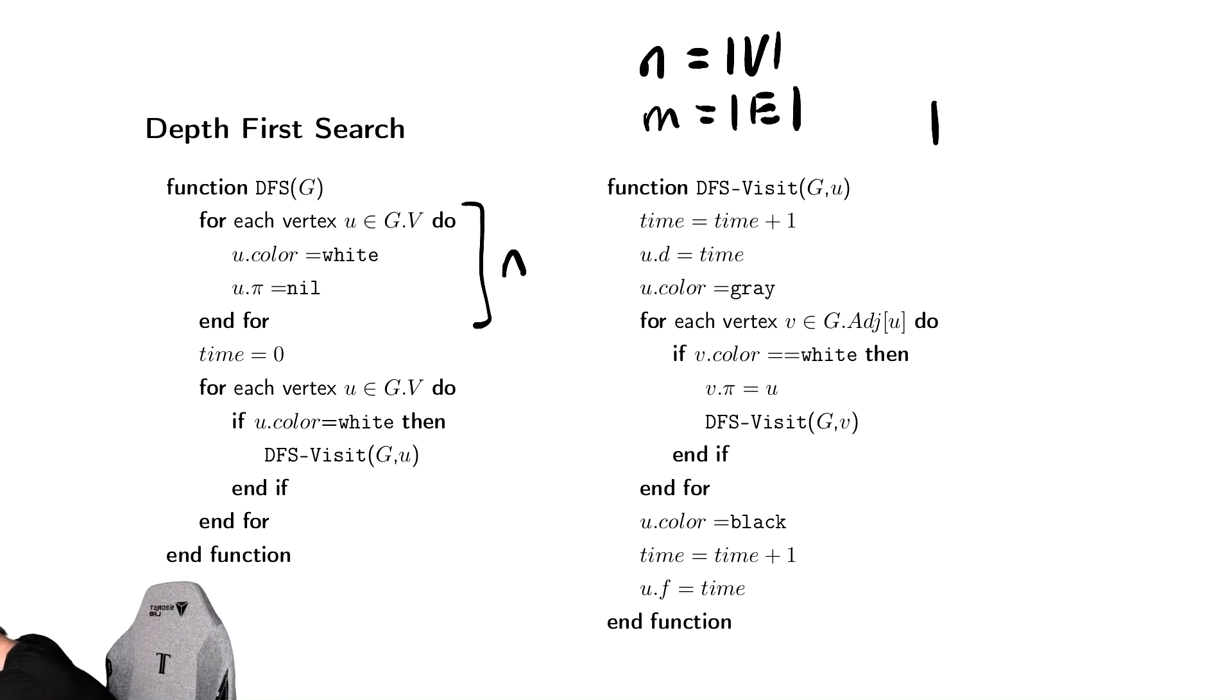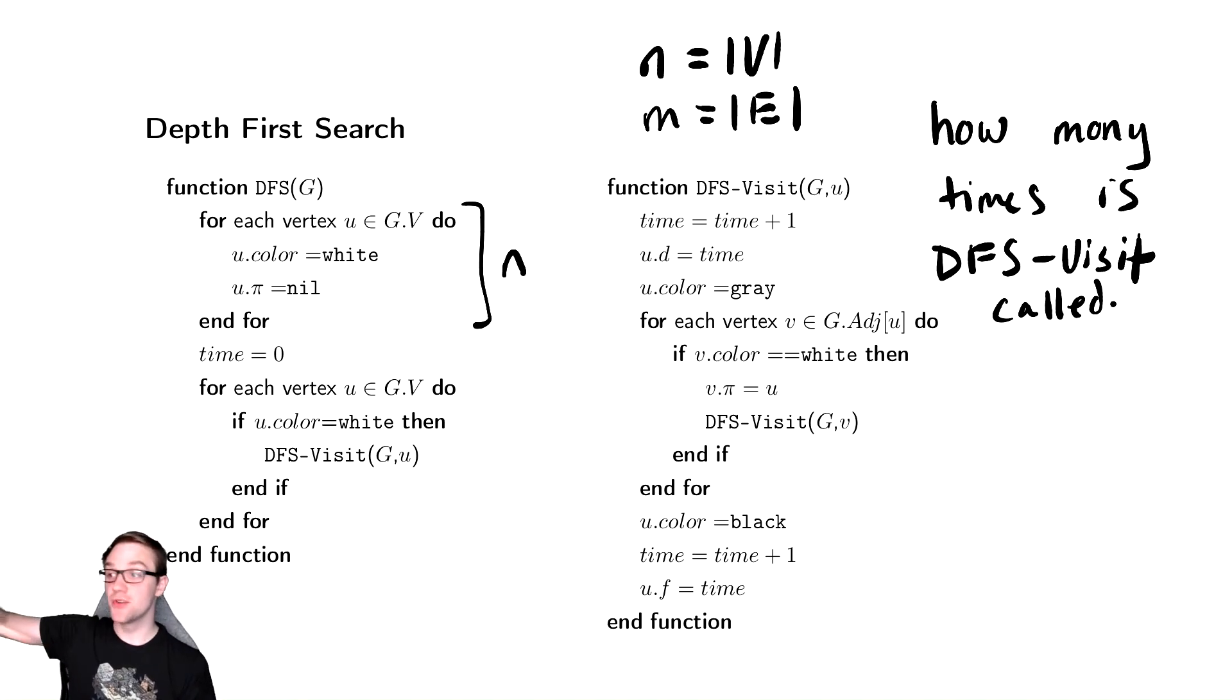So how many times is DFS-Visit called? Our first observation is that regardless of where it gets called, DFS or DFS-Visit, it is always stuck inside of a loop that says if a vertex is white, visit.